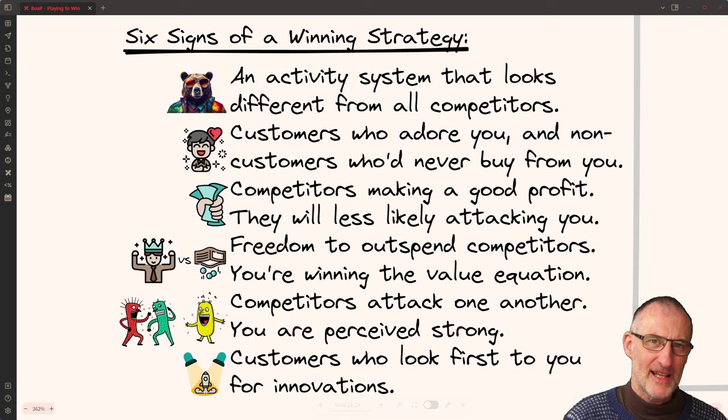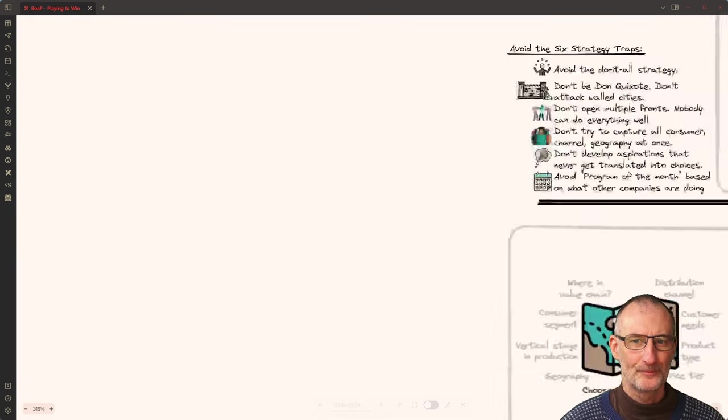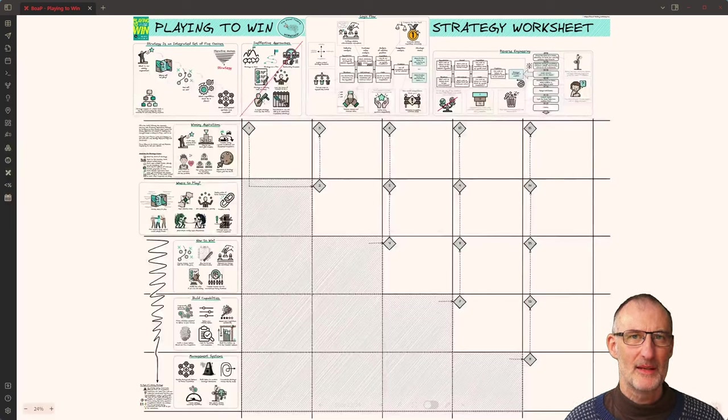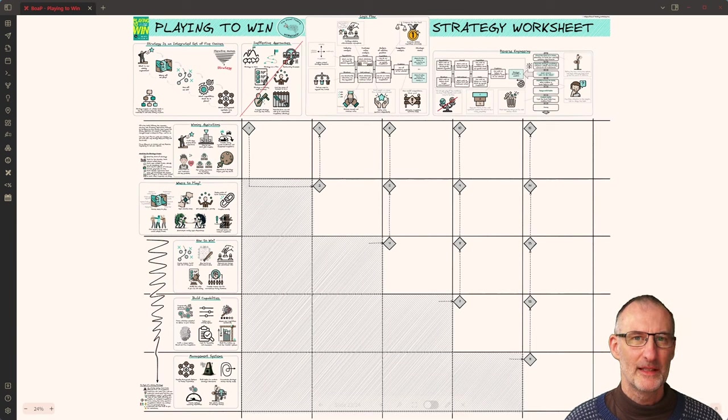When your competitors attack one another and you're the laughing third party, you know that you're perceived to be strong and this is a good position to be in. And finally, you know you have a good strategy when customers are looking to you for innovations and for whatever is new. So that is my book on a page summary and the strategic worksheet for playing to win.